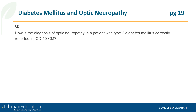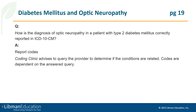How is the diagnosis of optic neuropathy in a patient with type 2 diabetes mellitus correctly reported in ICD-10-CM? Coding Clinic explains that optic neuropathy and diabetes mellitus are not linked by the terms with, due to, or associated with in the alphabetical index. Coding Clinic advises to query the provider to determine if the conditions are related.